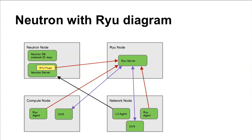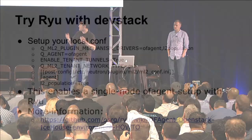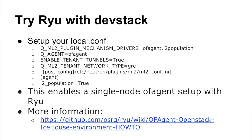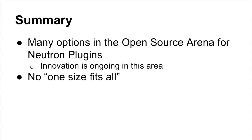To try Ryu with DevStack: check out a recent DevStack, enable the OF agent and L2 population, and set the agent to of_agent instead of Linux Bridge or Open vSwitch. There's additional config required. This sets up a DevStack instance with Neutron using the Ryu OpenFlow agent support in ML2. More information on setting this up with Ice House is available at the link provided.